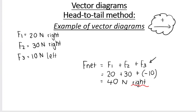In this example, there are three force vectors acting on an object. Force one is 20 Newton to the right, force two is 13 Newton to the right, and force three is 10 Newton to the left. In a previous video we looked at how to calculate the resultant vector using vector addition — click the link in the description for more help. Now we're going to focus on how to draw the head-to-tail vector diagram.